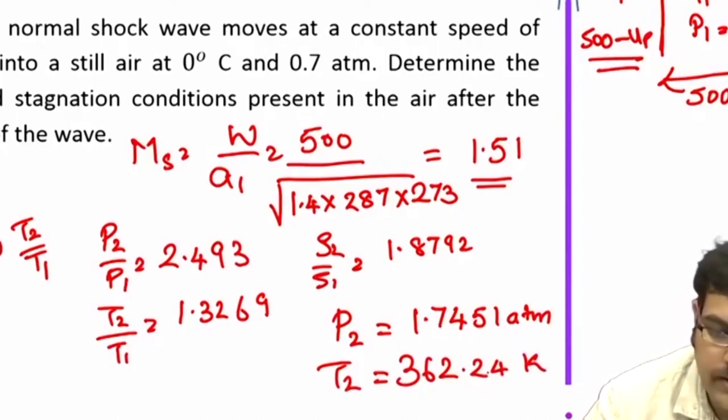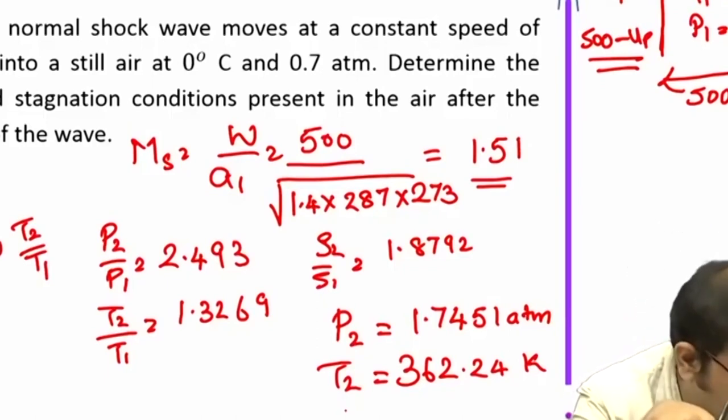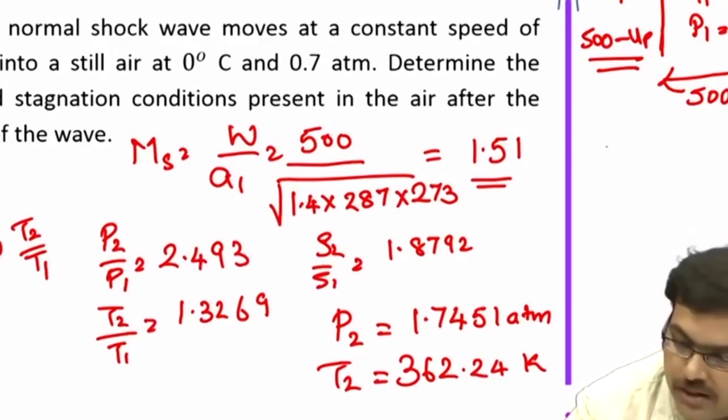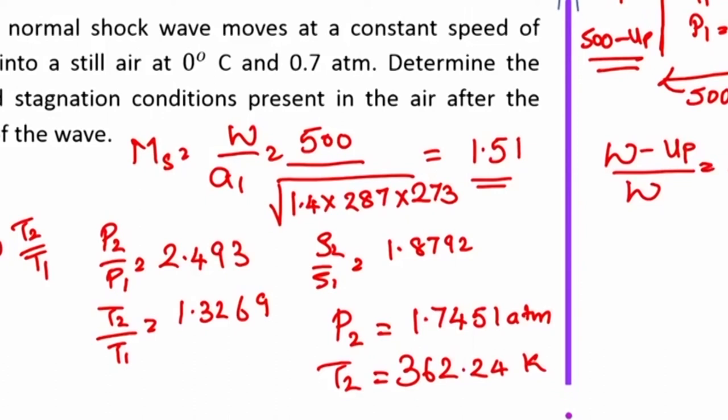Now what is the velocity of the gas behind the shock? We need to know this in order to calculate the stagnation conditions. As we had discussed before, stagnation conditions should be calculated separately. We can do that by using this condition: W minus UP by W is rho 1 by rho 2. Rho 2 by rho 1 is known, this is 1.879. 500 minus UP divided by 500 equals 1 by 1.879. UP turns out to be 233.929 meter per second.